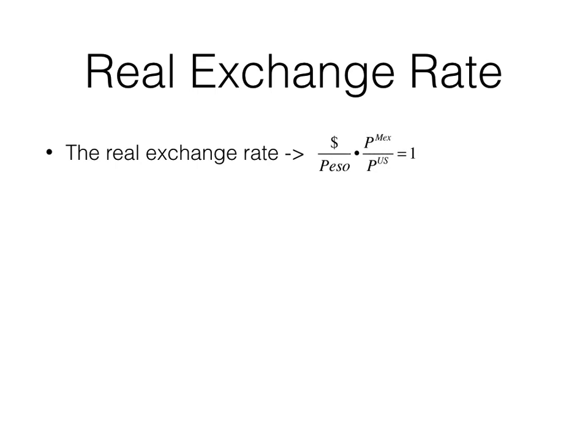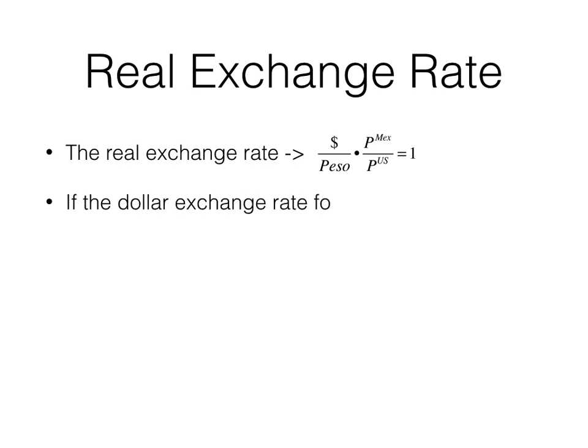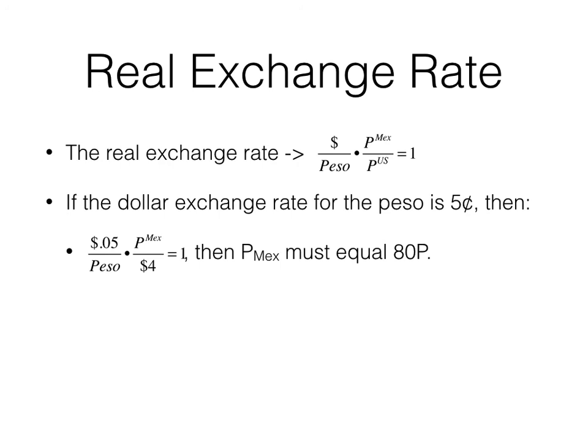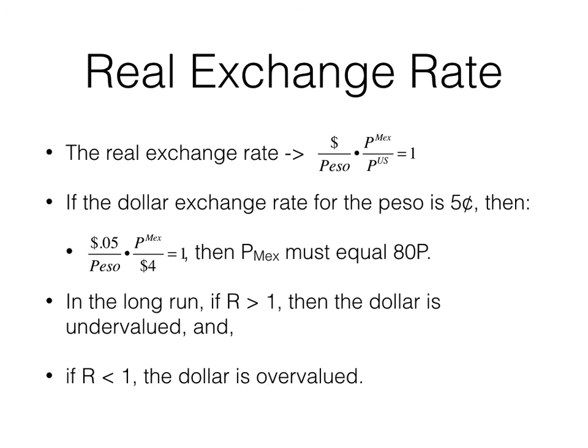The real exchange rate is, in this configuration, the dollars per peso times the price in Mexico divided by the price in the U.S. In the long run, that should equal 1. For example, if the dollar exchange rate for the peso is 5 cents and the Big Mac is $4, then in the long run the price in Mexico for a Big Mac must equal 80 pesos. If R is less than 1 — in other words, if it costs more than 80 pesos — then the dollar is undervalued, and you should see an appreciation of the dollar. If the real exchange rate is greater than 1, the dollar is overvalued, meaning the price in the U.S. is greater and people would be better off going to Mexico to buy the good, and you would see the value of the dollar depreciate over the long run.